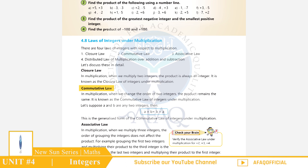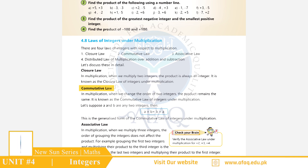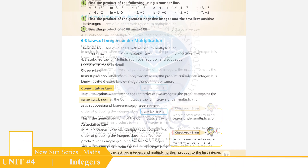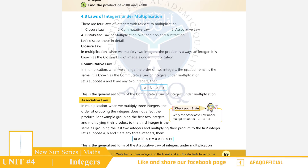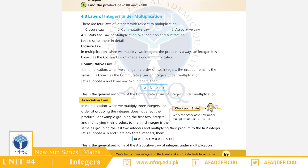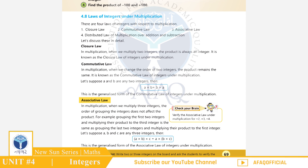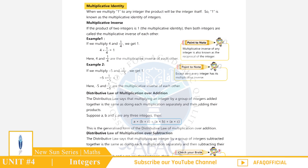Commutative Law: जब भी दो integers multiply होंगे तो इनका order change करने से जवाب पर असर नहीं पड़ेगा, जैसे A × B = B × A। Associative Law: अगर तीन integers हों तो इनका order change करने से जवाब पर असर नहीं पड़ेगा, जैसे (A × B) × C = A × (B × C).